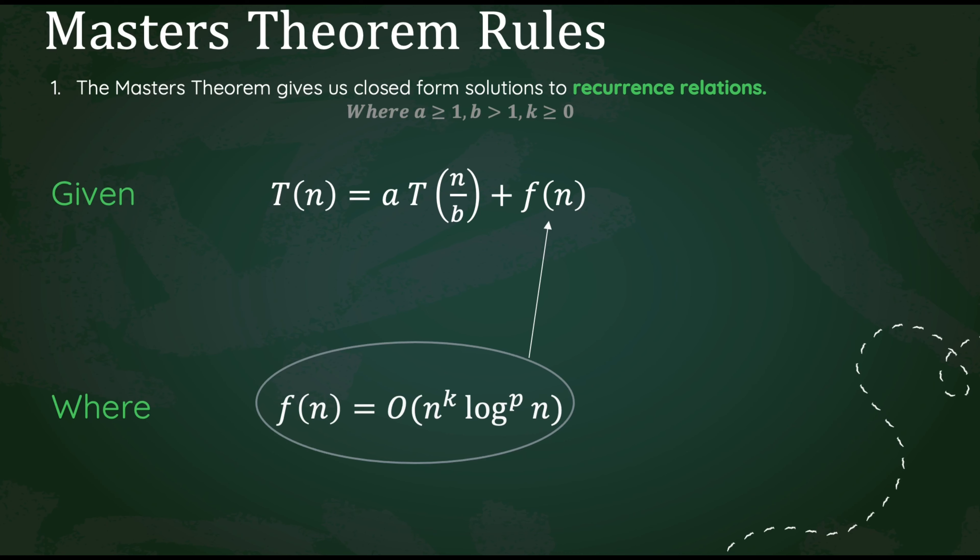We'll be given a T of n in the form T(n) equals a times T(n/b) plus f(n). Our f(n) will be equal to the format of theta n raised to the k log raised to the p times n.